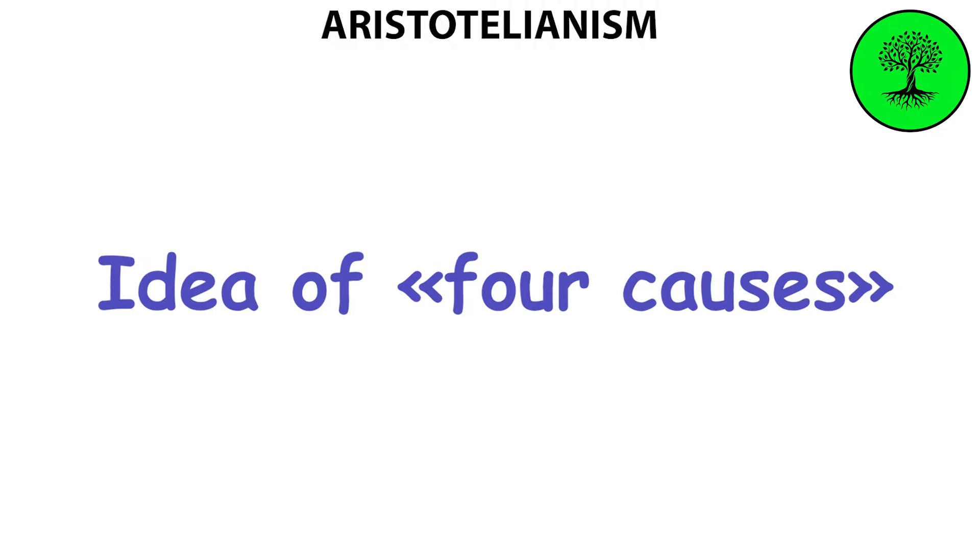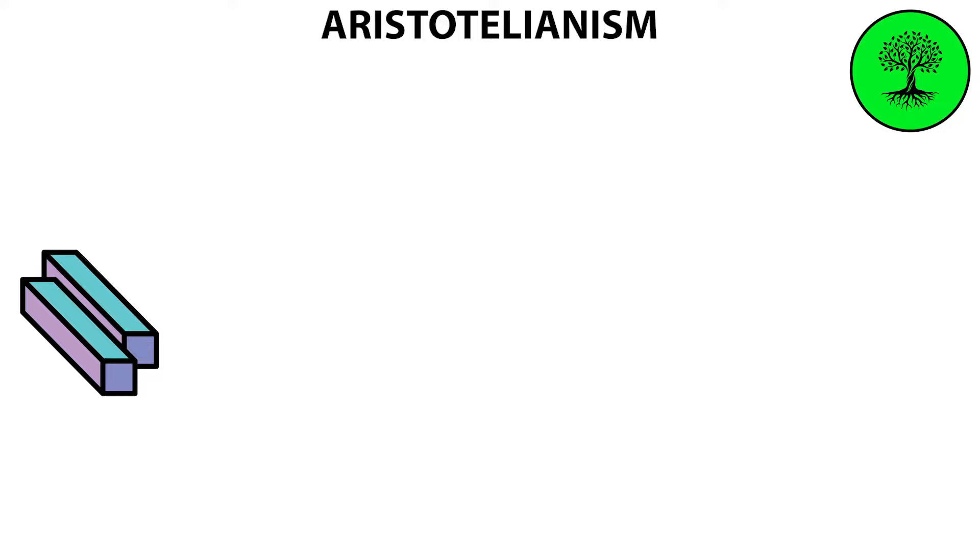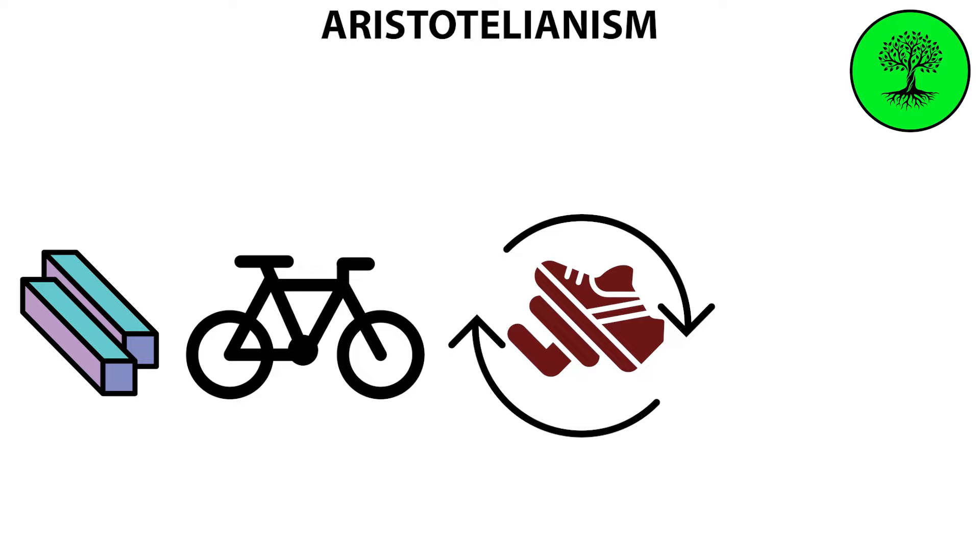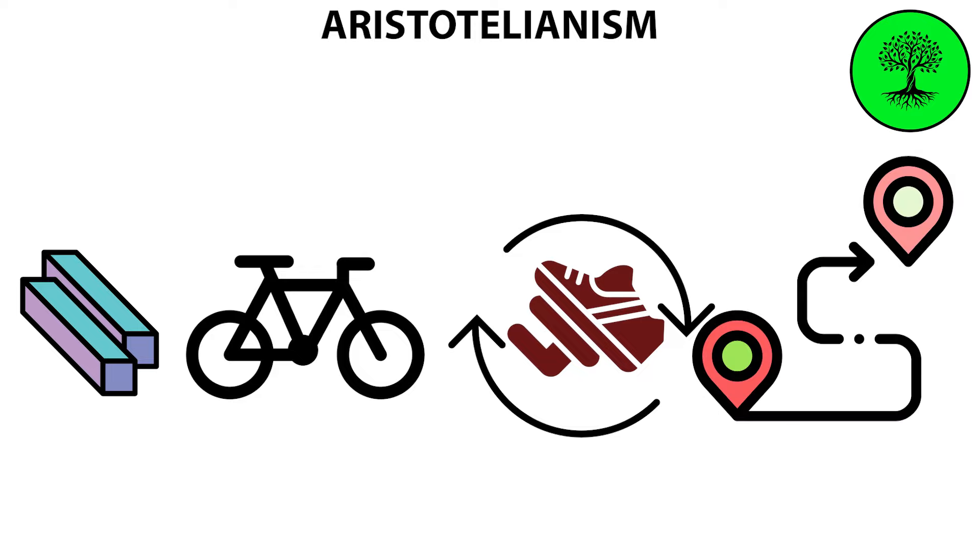Another important concept is the idea of four causes. These are the material cause, what something is made of; the formal cause, the shape or form a thing takes; the efficient cause, the thing or process that brings something into being; and the final cause, the purpose or function of a thing.